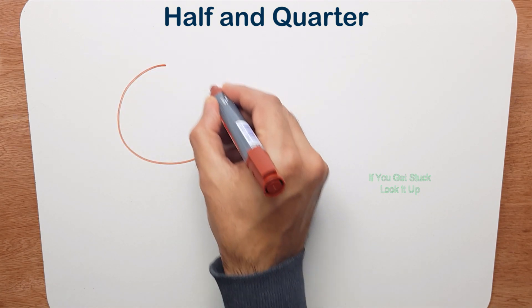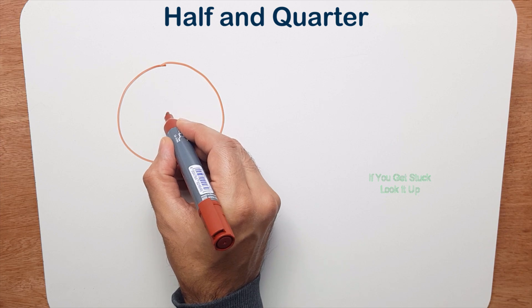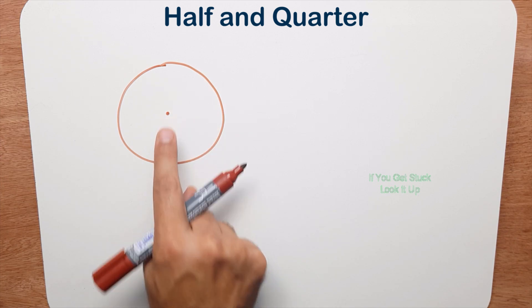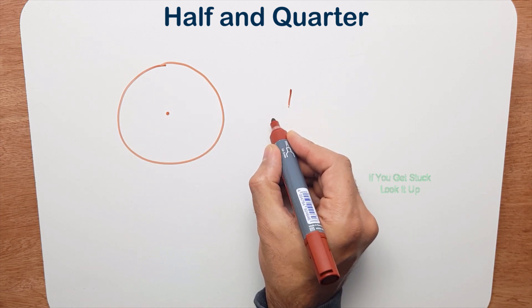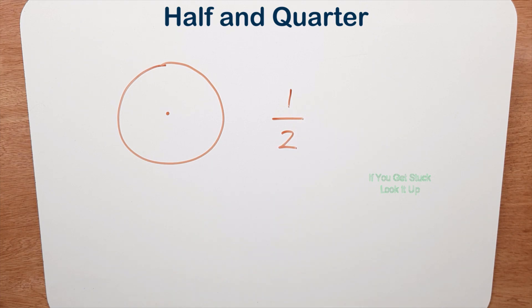Now, I'm going to use the pizza model. So there's my pizza and there's the center. Now I'm going to do a half. Now when I look at this, I look at the denominator. That's the bottom number. That tells me how many pieces I'm going to cut this pizza into.